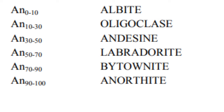Andesine is between 50 and 70. Bytownite is between 70 and 90, whereas anorthite, which is the calcium-rich end-member occurring at high temperatures of approximately 1,560 degrees Celsius, has an anorthite composition between 90 and 100.